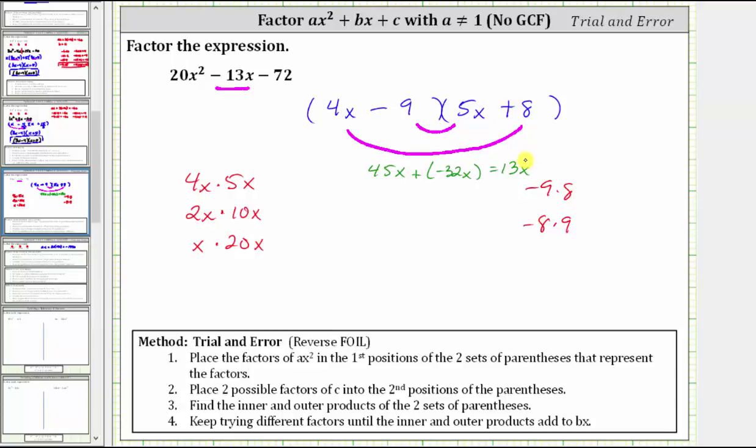And let's go ahead and check the sum of the inner and outer product again. The inner product is now negative 45x, plus the outer product is 32x, which now does give us negative 13x, which is what we want. So now we know the trinomial is factored correctly using the method of trial and error. We have a factor of 4x minus 9, and we have a factor of 5x plus 8. I hope you found this helpful.